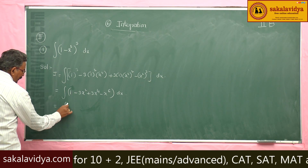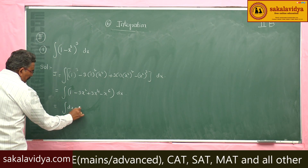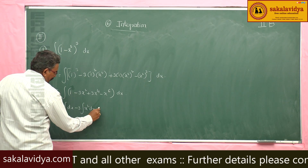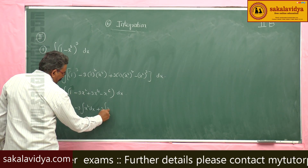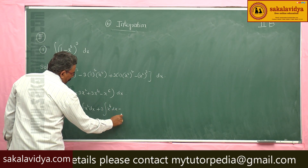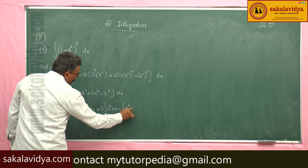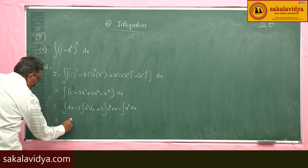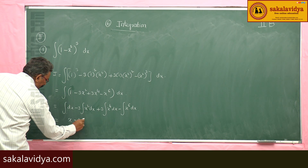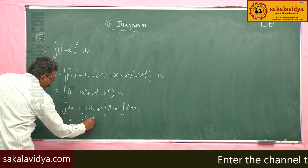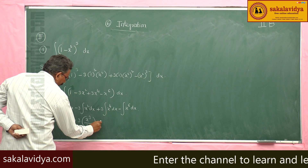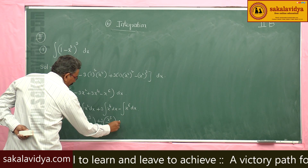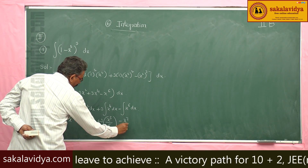This equals the integral of dx minus 3 times the integral of x² dx plus 3 times the integral of x⁴ dx minus the integral of x⁶ dx. Evaluating: x - x³ + 3x⁵/5 - x⁷/7 plus constant of integration.